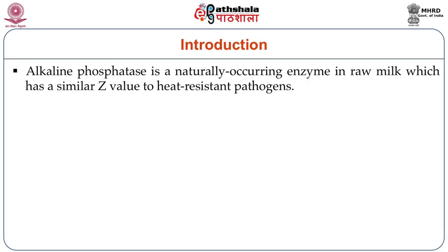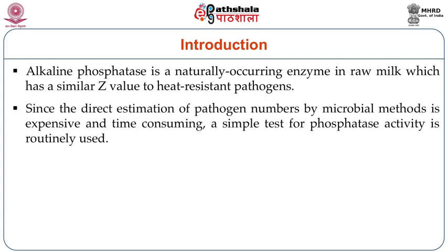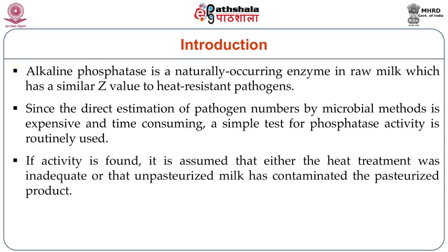In milk, alkaline phosphatase is a naturally occurring enzyme present in raw milk and it has a similar Z value to heat-resistant pathogens. Since direct estimation of pathogens by microbial methods is very expensive and time-consuming, a simple test for phosphatase activity is routinely used. If the activity is found, it is assumed that either the heat treatment was inadequate or that unpasteurized milk has contaminated the pasteurized product, making it not safe for consumption.